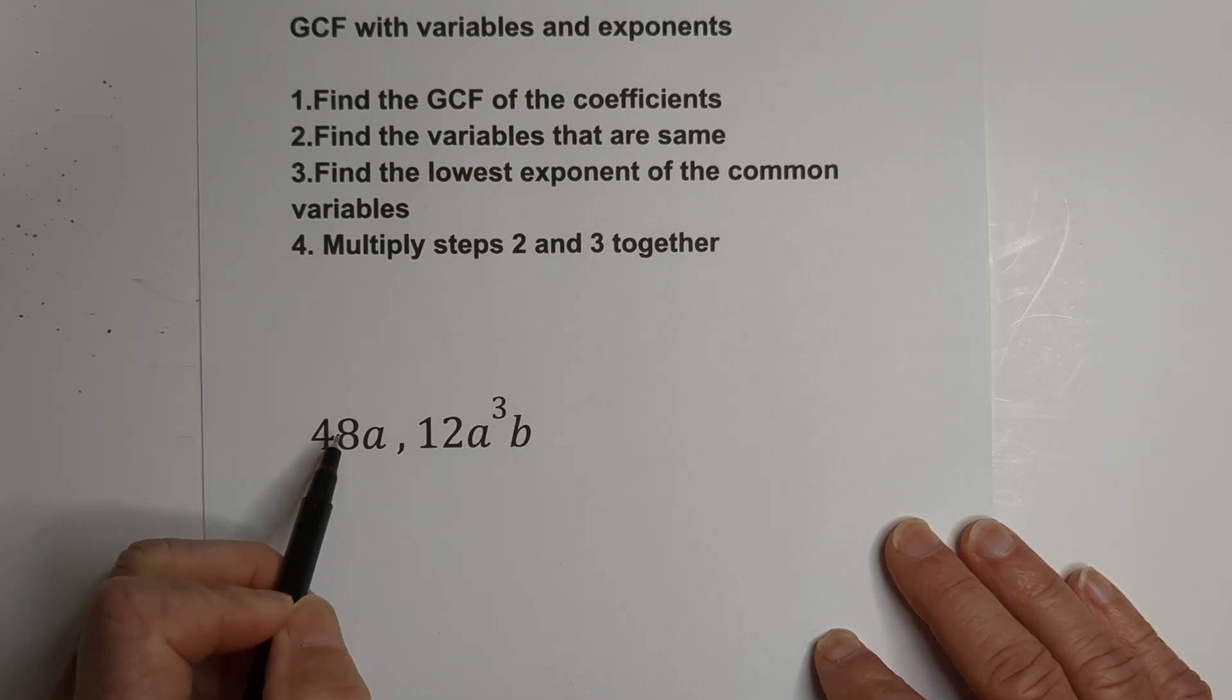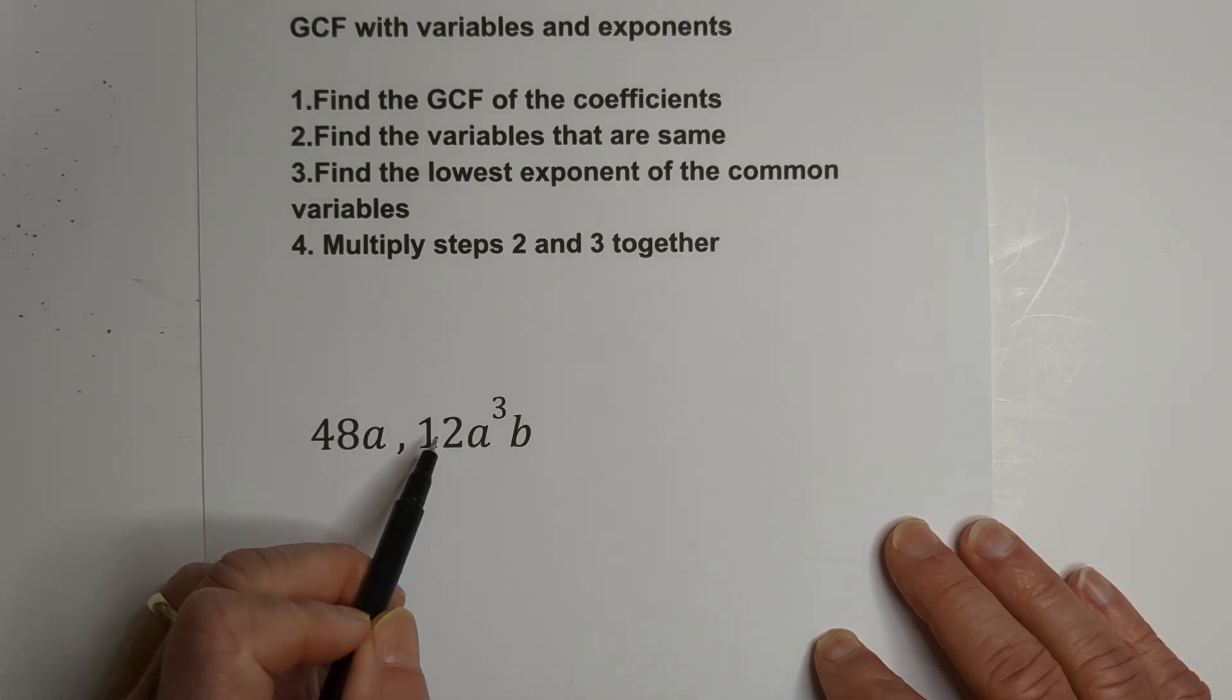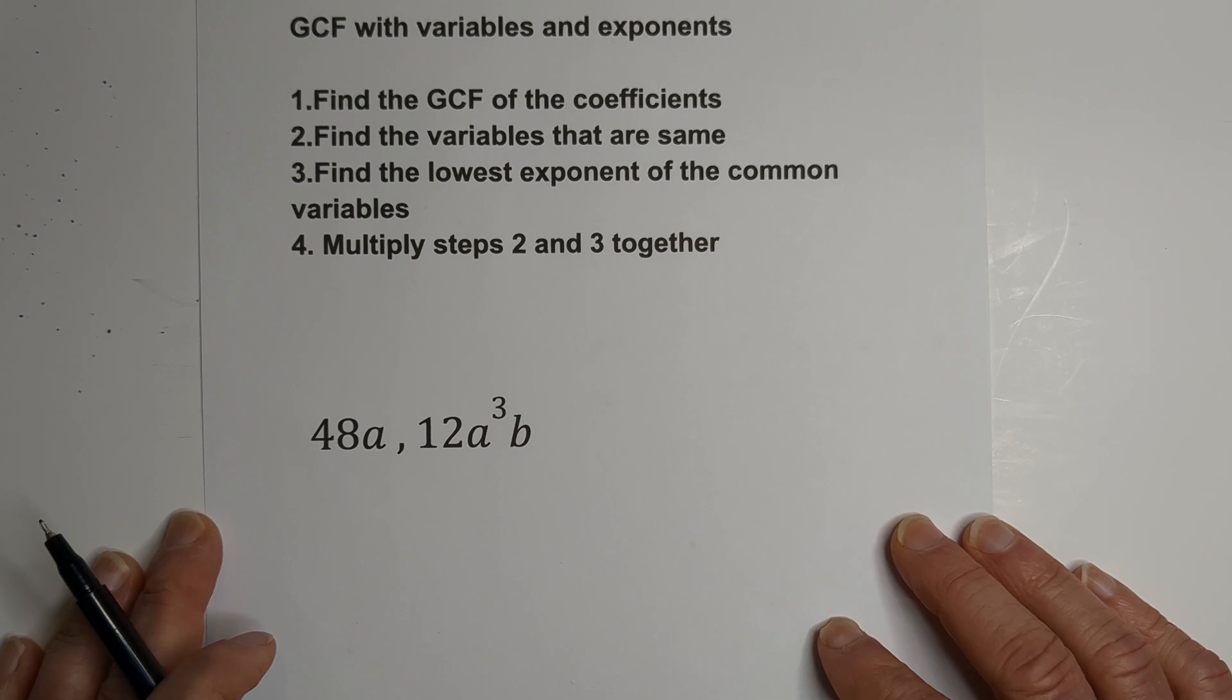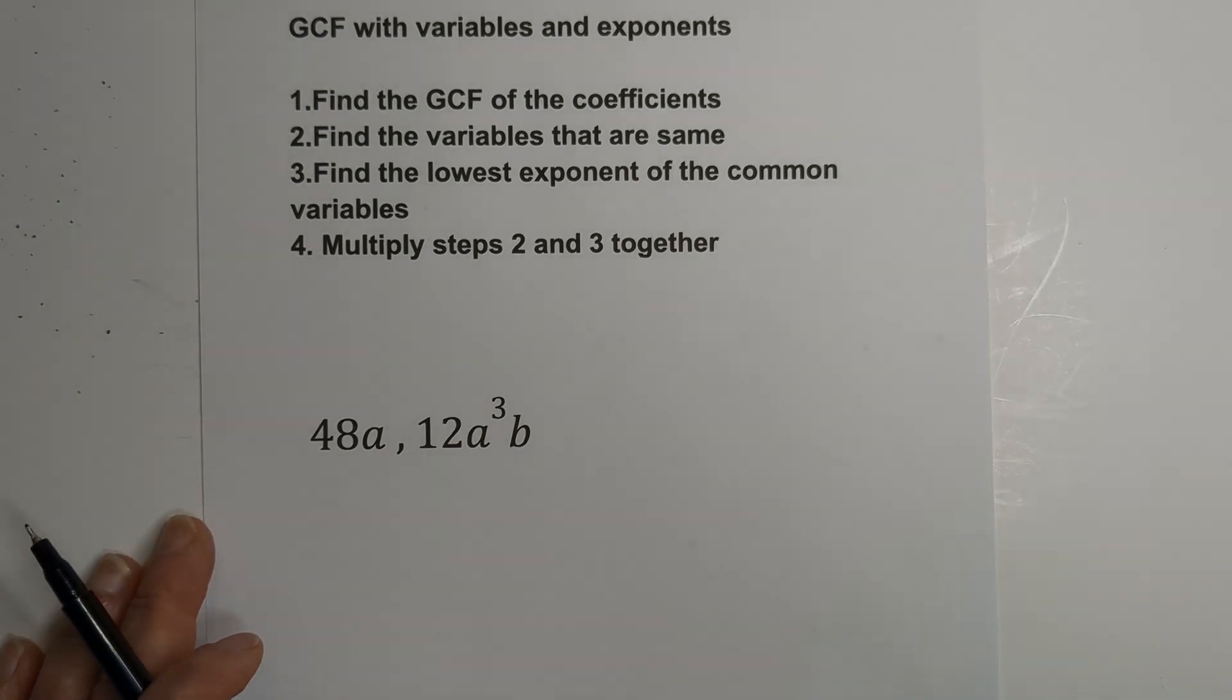Step one, we need to find the greatest common factor of these two coefficients, 12 and 48. I personally just like to use a factor tree. There's other ways you can do it. So let's get started with a factor tree.